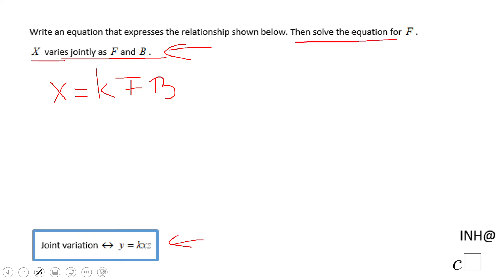the equation for F. So now we're looking, and we notice F is right here, so we need to get rid of the k and the B. Since everything is multiplication, we're going to divide by k, we're going to divide by B, and we end up with F equals X over k and B.